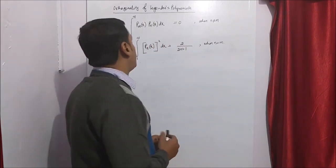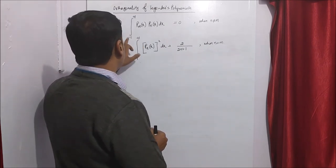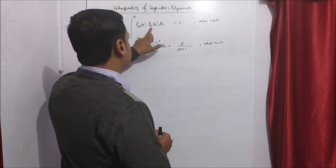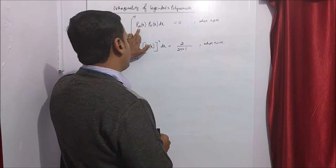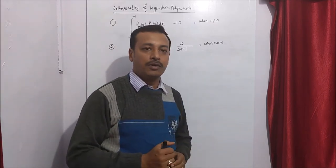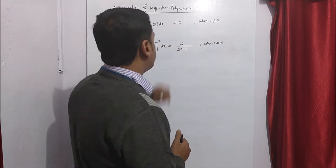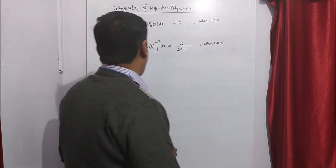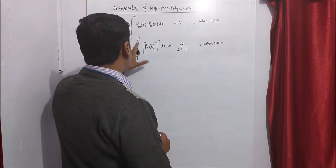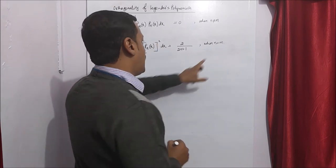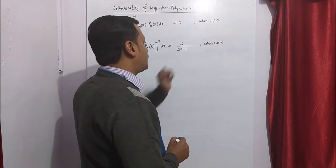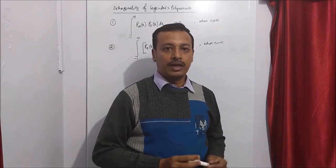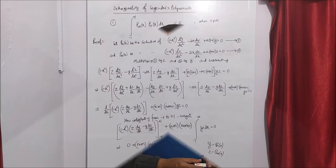There are two orthogonal properties of Legendre Polynomial. First: integration from minus 1 to plus 1 of Pm(x) Pn(x) dx equals 0, where n is not equal to m — where Pm is Legendre polynomial of order m and Pn is Legendre polynomial of order n. Second property: integration from minus 1 to plus 1 of Pn(x) squared dx equals 2 divided by 2n plus 1, when n equals m.